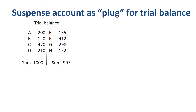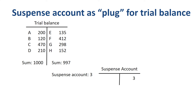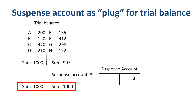If the total of the debit column does not equal the total of the credit column, this shows there is an error in the nominal ledger accounts. In this example, our debits on the left are bigger than our credits on the right. This is where a suspense account comes in — you plug the missing amount, a credit amount of 3, into the suspense account, in order to artificially and temporarily balance the trial balance. You then start the error review and correction process. These errors causing the imbalance must be found before a profit and loss statement and balance sheet can be produced.